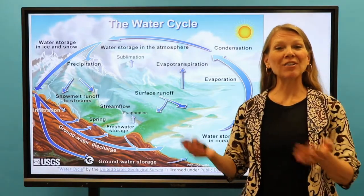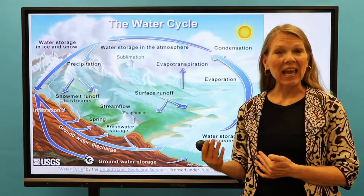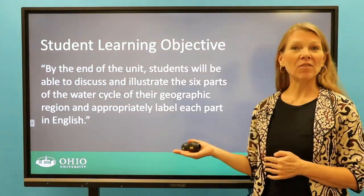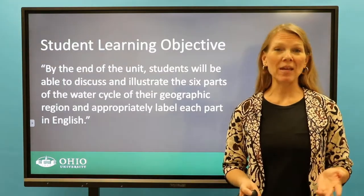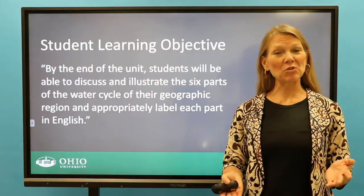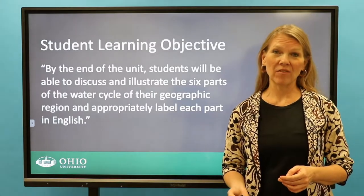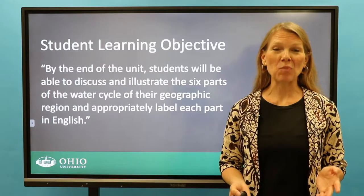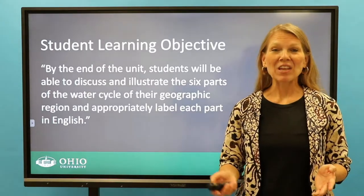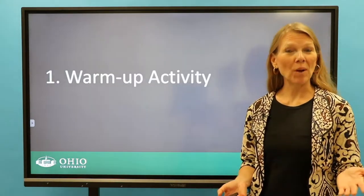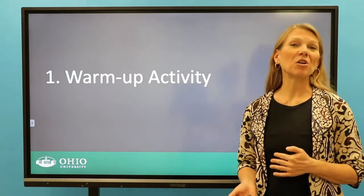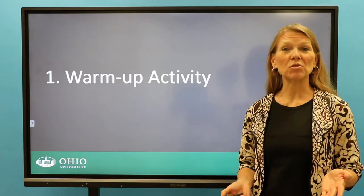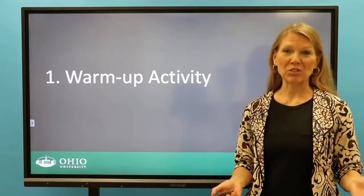As a point of reference, here is an image of the water cycle, and the student learning objective for this lesson is: by the end of this unit, students will be able to discuss and illustrate the six parts of the water cycle of their geographic region, and appropriately label each part in English. The first part of the lesson is a warm-up activity. Let's look at an example of how you can use word clouds to introduce new concepts or review key terms.